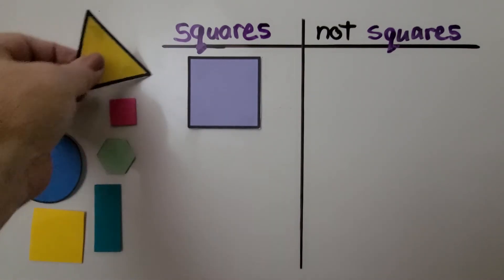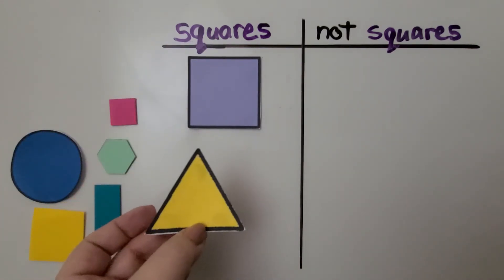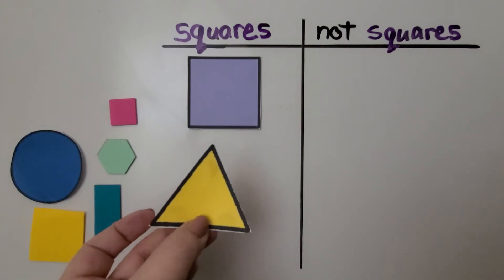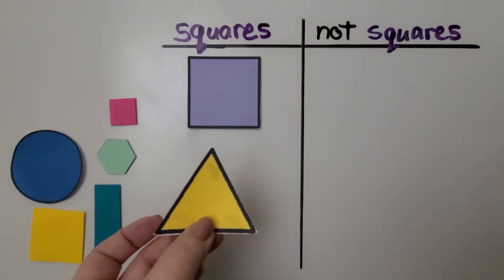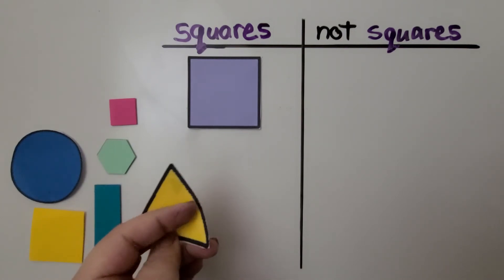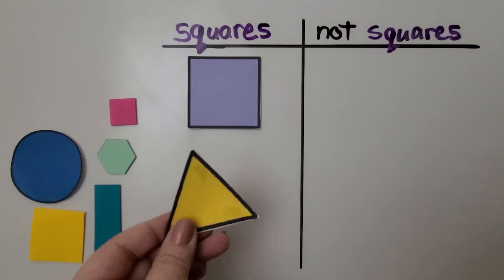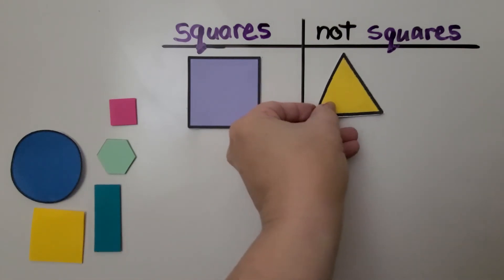Is this a square? Does it have four sides? No — I see one, two, three sides. That's not a square. We can put it on this side.